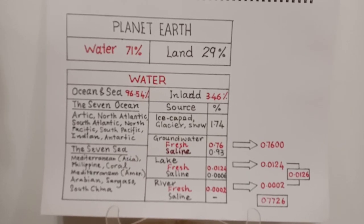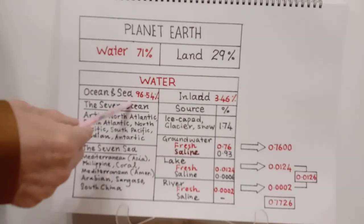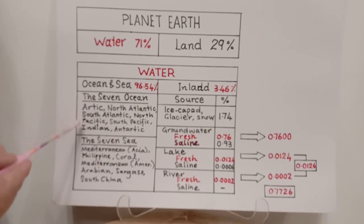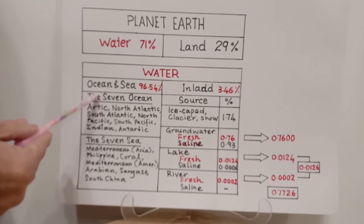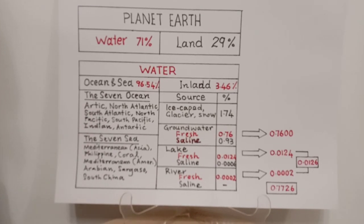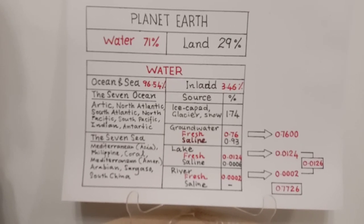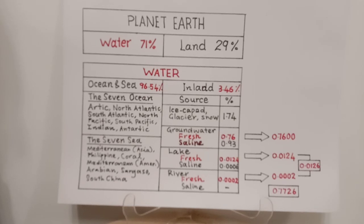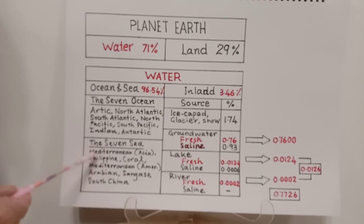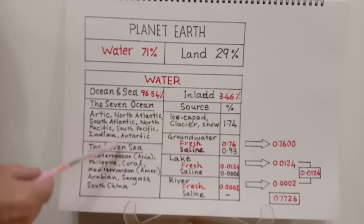Ocean and sea water is supplied by oceans as well as seas. The seven largest oceans of the world are the Arctic, North Atlantic, South Atlantic, North Pacific, South Pacific, Indian Ocean, and Antarctic Ocean. The seven largest seas of the world contribute less than the oceans.